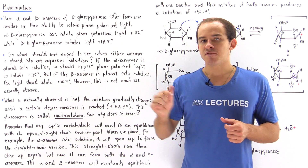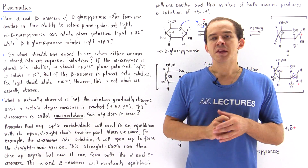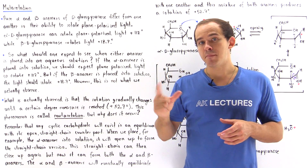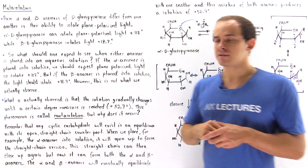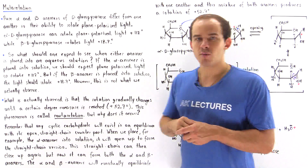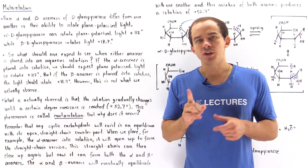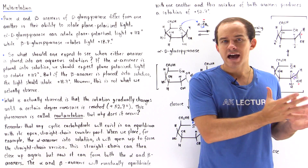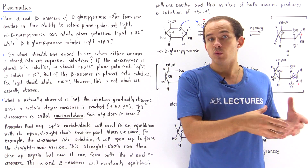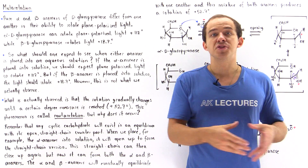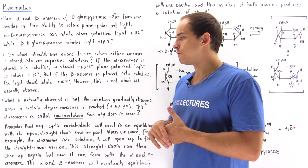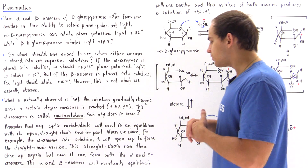However, when it closes, because a rotation of a bond is possible, not only will the alpha anomer re-form from what we began with, but the beta anomer can also form.